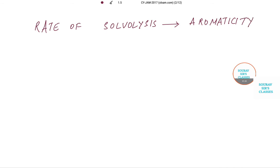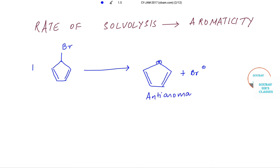Let's look at the diagrammatic representation. Number one: we have this cyclopentyl structure with Br, which can be written as a cyclic structure with a positive charge. This is an anti-aromatic ring.